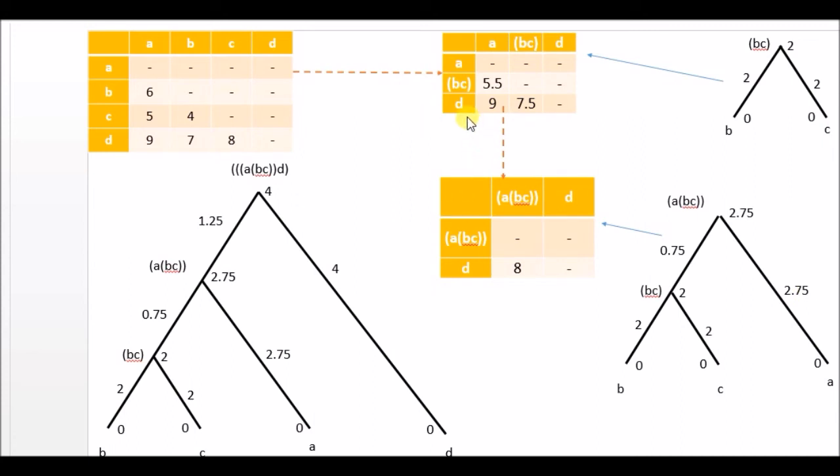In this case what will be the distance value from D to ABC? The same thing will happen here. I got distance from A to BC 5.5 and A to D is 9 and D to BC is 7.5.